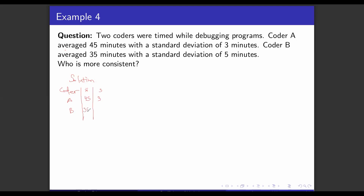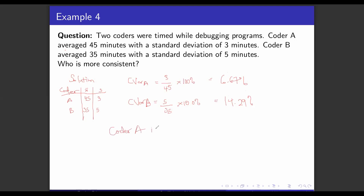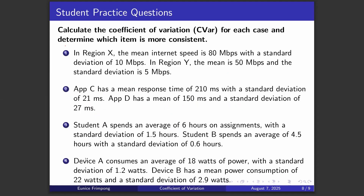Coder B has a mean of 35 minutes and a standard deviation of 5. Because we want to know who is more consistent, we find the coefficient of variation for each. The CV for Coder A is standard deviation over mean times 100% = 3 over 45 times 100% = 6.67%. The CV for Coder B is standard deviation over mean times 100% = 5 over 35 times 100% = 14.29%. Since the CV for Coder A is lower, we conclude that Coder A is more consistent.